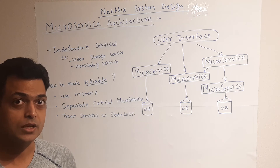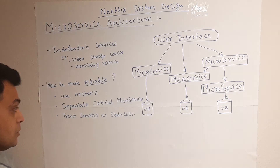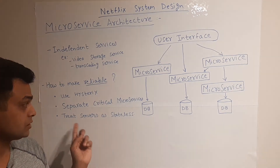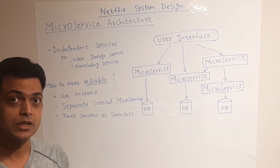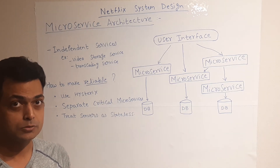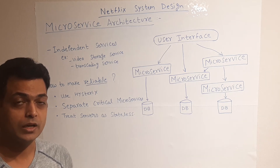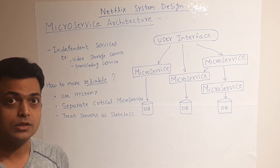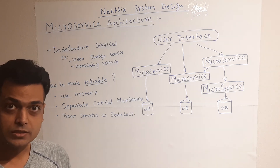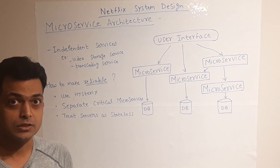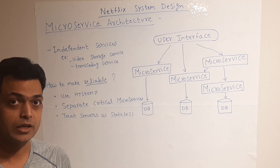Services like video search and playback are put under reliable services and will always work. The rest can be put as non-critical microservices. That way we can make the system more reliable. The third approach is to treat servers as stateless — meaning if a microservice is not able to return a response in a timely manner, or an exception occurs, there could be another node spun up to handle it.